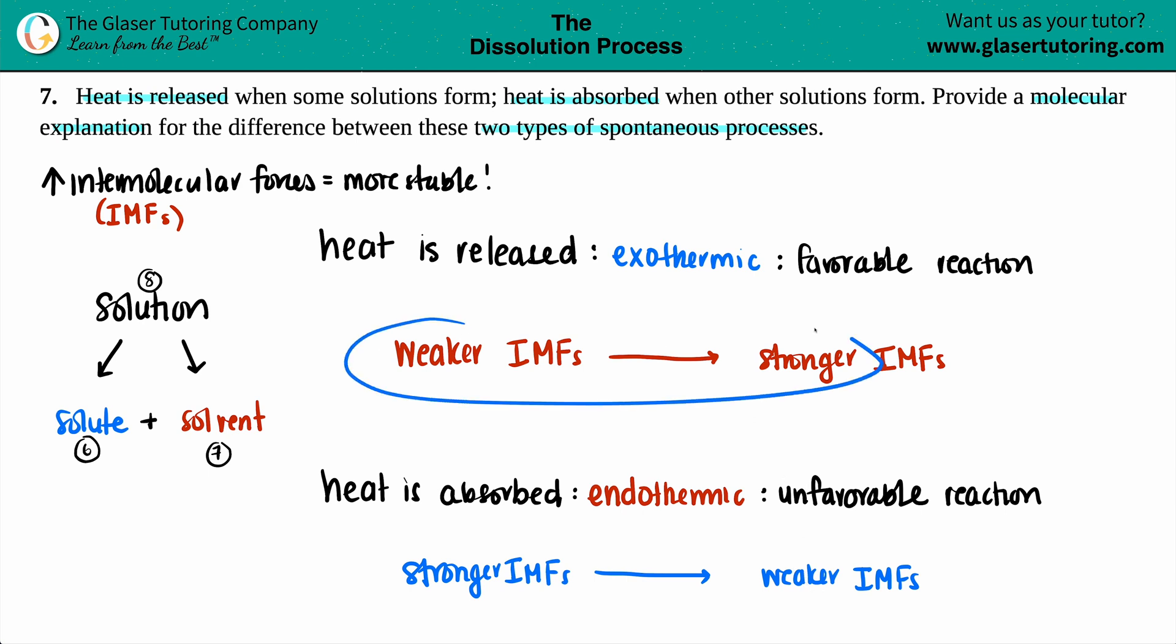So for this one, I guess we'll just say one more thing, is that when you went from weaker intermolecular forces to stronger ones, the weaker ones were in the pure solute and pure solvent. But then when you mix them together to make the solution, in this case those made stronger intermolecular forces. But on the flip side, if you made an unfavorable reaction, the stronger intermolecular forces were in the pure solute by itself and the pure solvent. But then when you mix the two of them together and you made a solution, unfortunately those are the weaker intermolecular forces. That's when heat is absorbed.